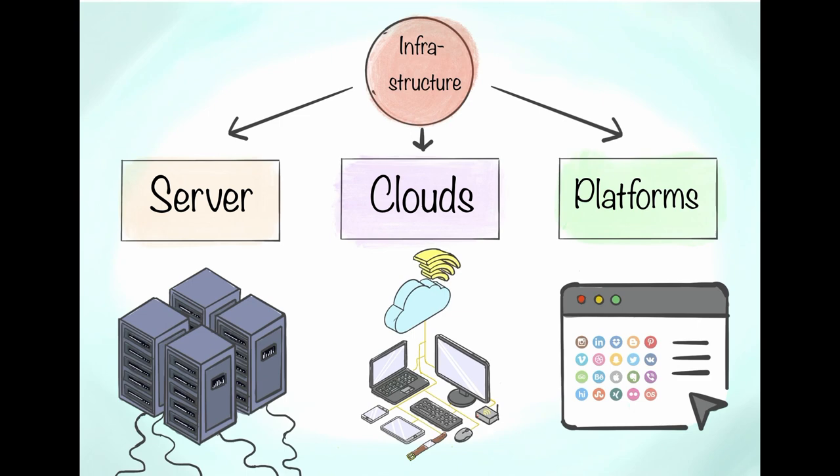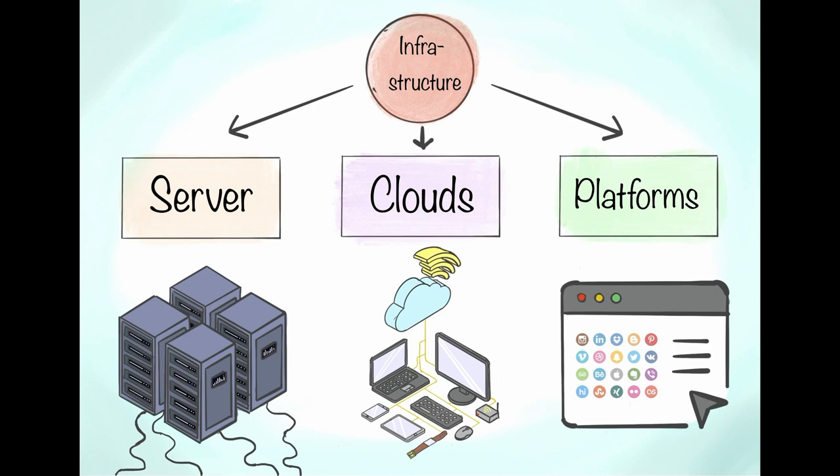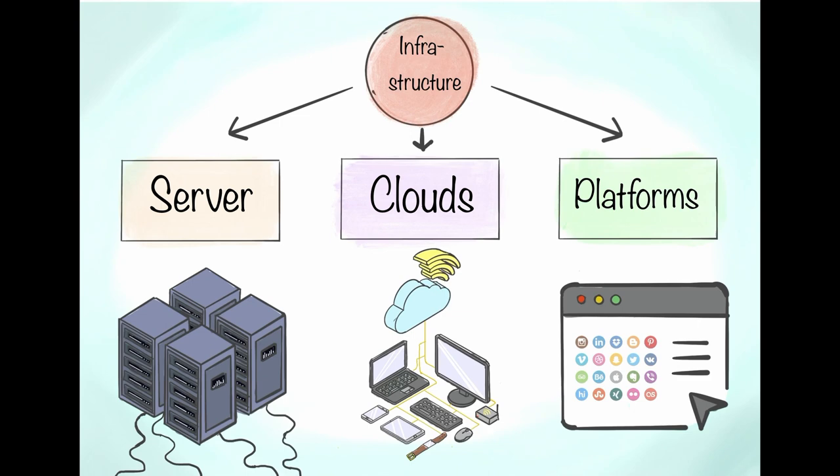The German police uses the Amazon clouds to save their data which is an example of how a public institution is dependent on a big tech company. To build and run servers and clouds is very expensive. On platforms I will say something more later on.